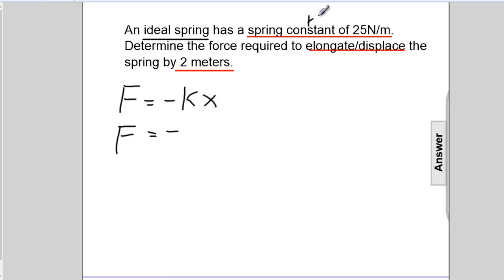k is the spring constant, which is 25 newtons per meter, times the elongation, 2 meters. Meters will cancel and we end up with newtons. So the force is 50 newtons.